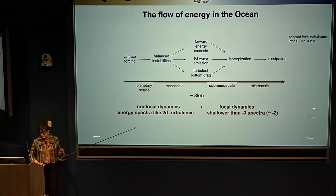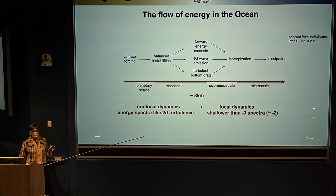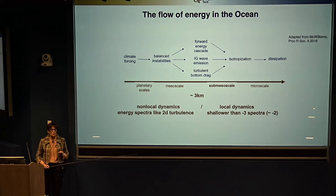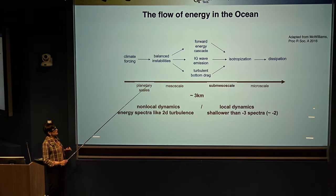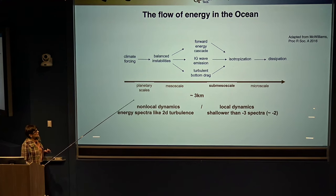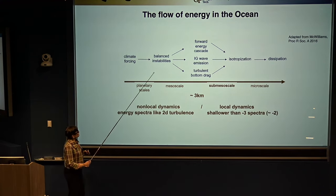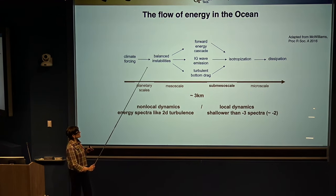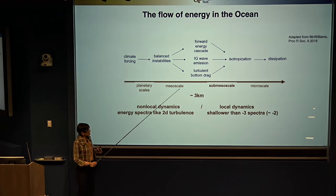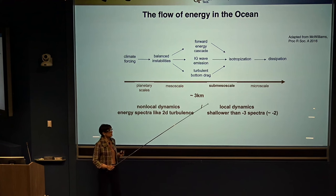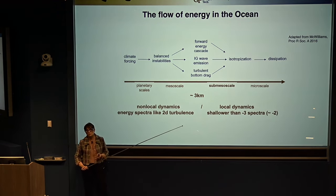The ocean is a peculiar fluid — it's denser than the atmosphere, on a rotating planet, and very stratified: the surface is much lighter than the bottom. That makes the patterns that form different from what we observe in the atmosphere. We have vortices that form at the mesoscale, on the order of tens of kilometers, and then something happens around three kilometers. Below those scales we have structures we've been studying for about 25 years, which we call sub-mesoscales.